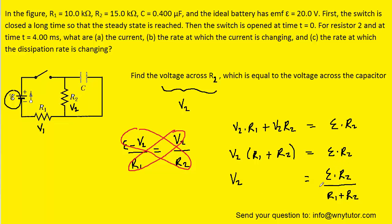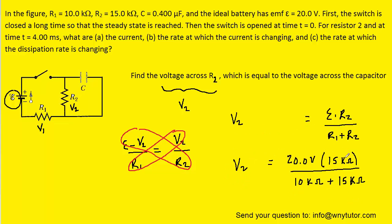Now that we have this expression for V2, we can substitute in the known values. The EMF of the battery is given as 20 volts, R2 is given as 15 kilohms, and R1 is 10 kilohms. Substituting those values in, we get a value of V2 of exactly 12 volts. This is the voltage across resistor 2 after the switch has been closed for a long period of time.